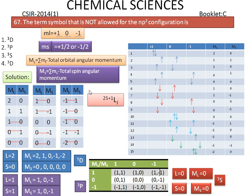Returning to the original question — the term symbol not allowed for the NP2 configuration: 1D is allowed, 3P is allowed, and 1S is also allowed. However, 3D is not allowed for the NP2 configuration. So the correct answer is 3D, which is the 4th option.